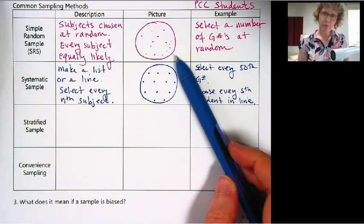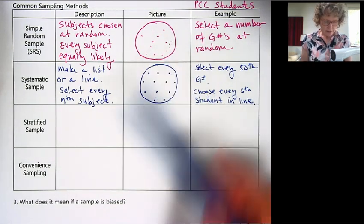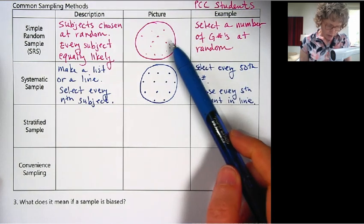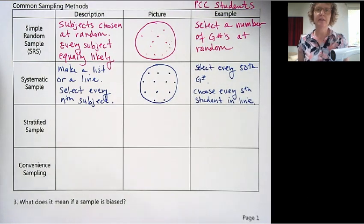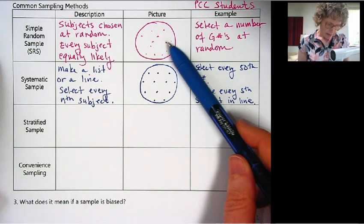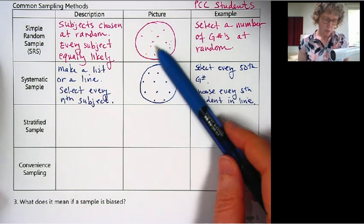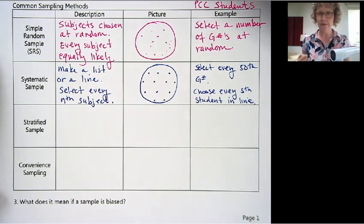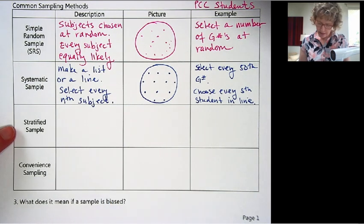We might not always want to use a simple random sample because, because we're drawing at random, we could get clustered, sort of a clustered sample. We could get more folks from Sylvania or more folks from Southeast. So another way to combat that, another type, is the stratified sample.